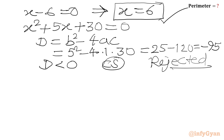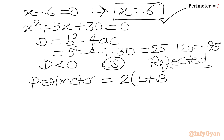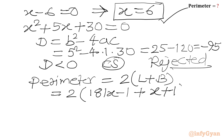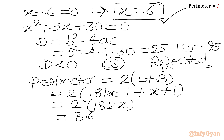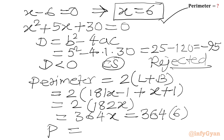Now we have to calculate the perimeter. The perimeter of a rectangle equals 2 times (L plus B). Substituting our expressions: 2 times (181x minus 1 plus x plus 1) equals 2 times 182x equals 364x. Now substituting x equals 6: 364 times 6 gives us the perimeter P equals 2184 units. This is our final answer.